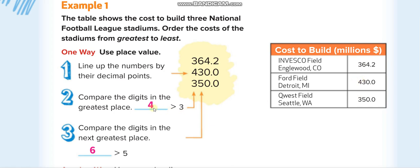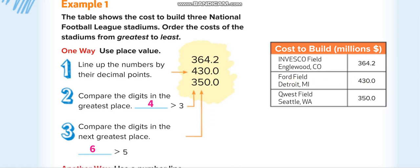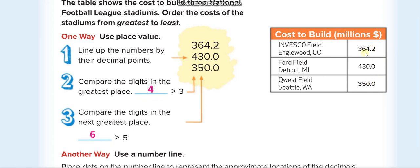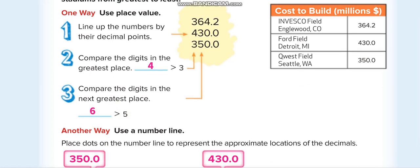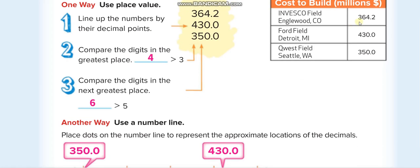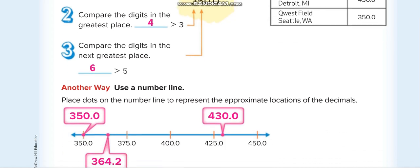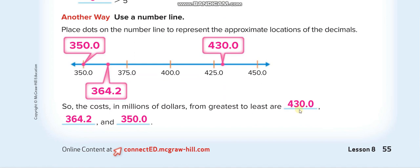Since four is greater than three, Ford Field Detroit at $430 million comes first. Now comparing the remaining two, the second digit is six versus five — six is greater than five — so $364.2 million is second and $350 million is third. The order from greatest to least is: $430 million, $364.2 million, $350 million.